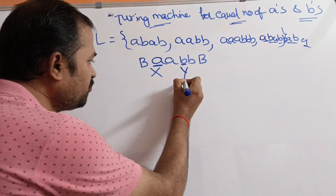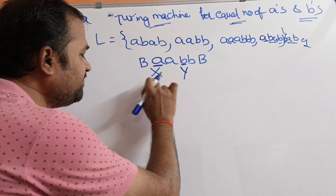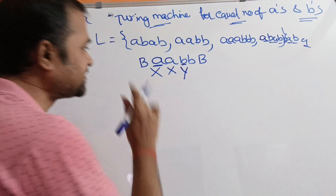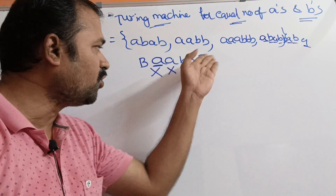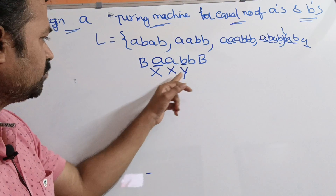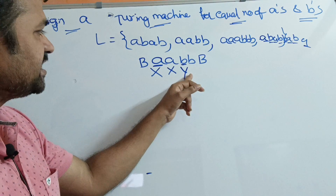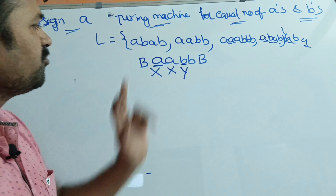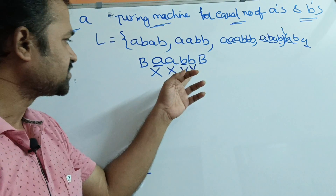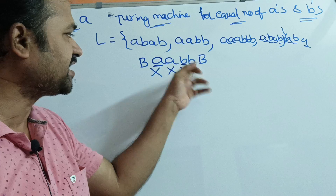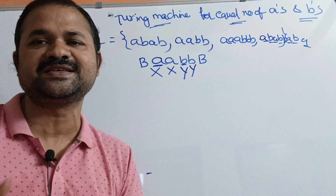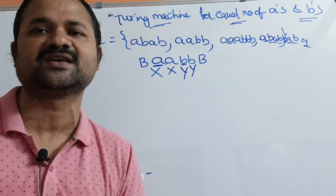Then move towards the left till we get X. After X, we have A. So, replace this A by X and then move towards the right till we get Y. After Y, we have B, so replace this B by Y. For this X, we have the corresponding Y. And after that, we have blank symbol. So, if we get the blank symbol, then we can say that our string is a valid string.